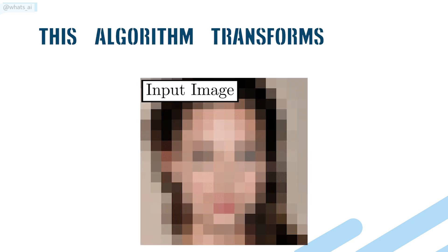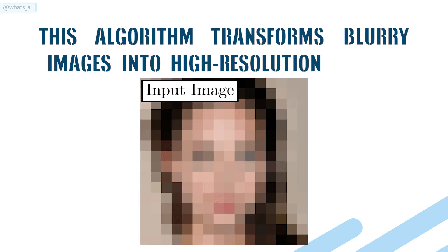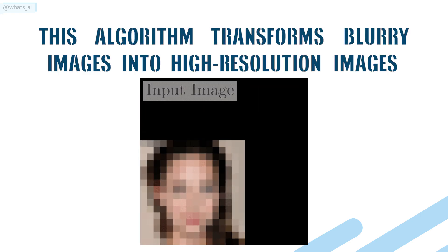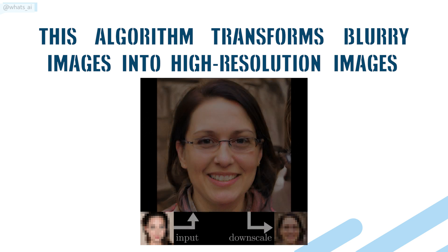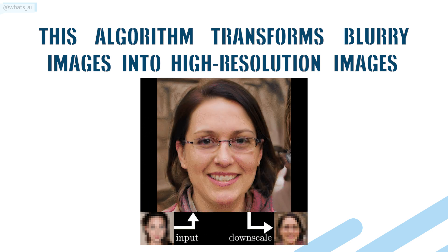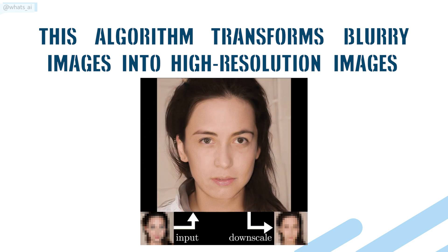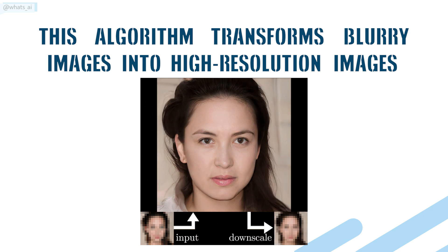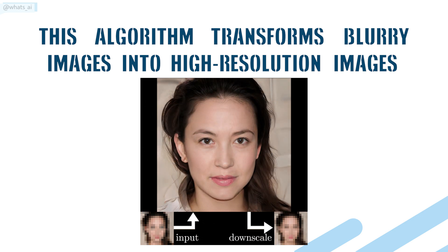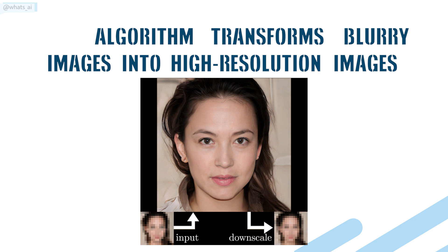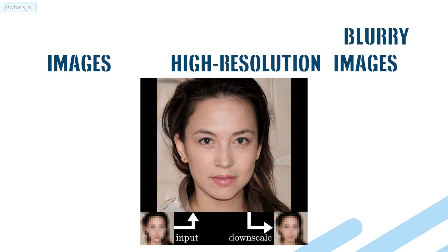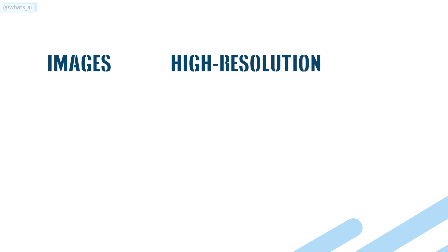This new algorithm transforms a blurry image to a high-resolution image. It can take a super low resolution like a 16x16 image and turn it into a 1080p high-definition human face. You don't believe me? Then you can do just like me and try it yourself in less than a minute. But first, let's see how they did that.